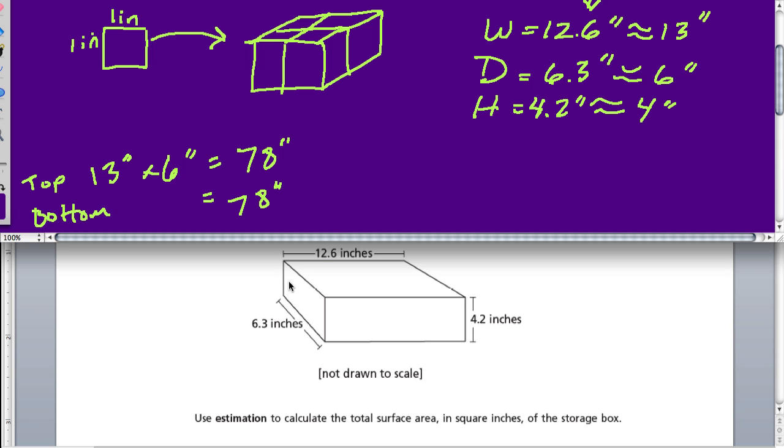Let's talk about this side right here as the left side, and the left side is 6.3 inches by 4.2, but we're rounding it to 6 inches by 4 inches, so that's 24 inches. And the right side over here equals that, so the right is also going to equal 24 inches.